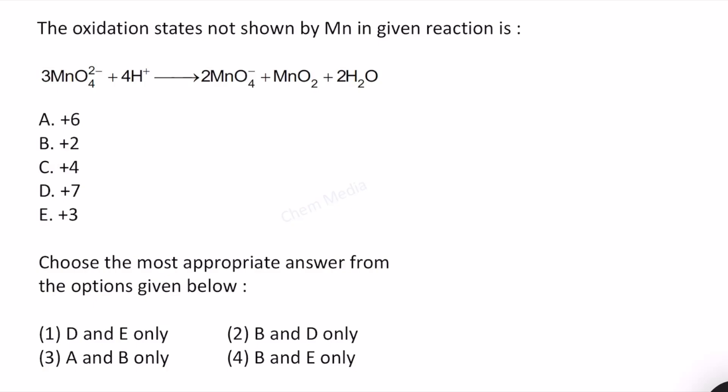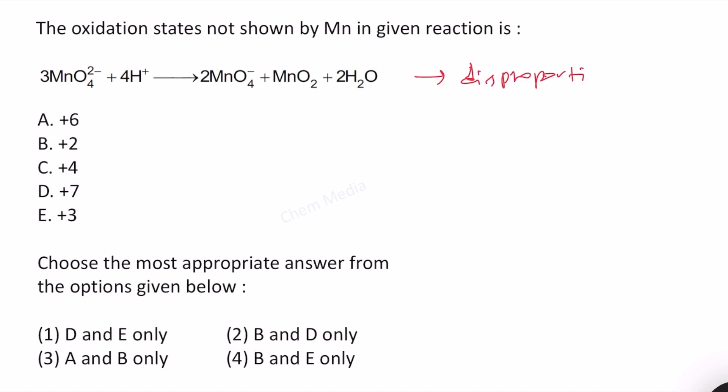The oxidation states not shown by manganese in the given reaction is what we need to find out. This reaction, MnO4^2- in acidic medium giving permanganate ion and manganese dioxide and water, is an example of disproportionation reaction because the same species undergoes both oxidation as well as reduction. Increase in oxidation number is oxidation and decrease in oxidation number is reduction.